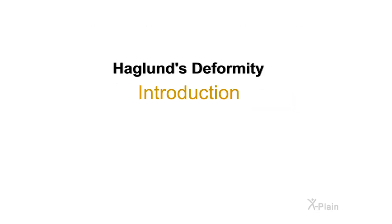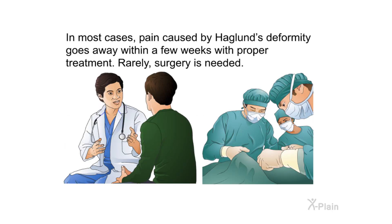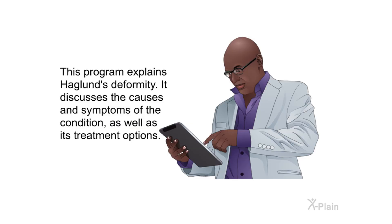Haglund's deformity is a bone enlargement that affects the foot. The condition happens at the back of the heel bone and is most often caused by improper footwear. In most cases, pain caused by Haglund's deformity goes away within a few weeks with proper treatment. Rarely, surgery is needed. This program explains Haglund's deformity, discussing the causes, symptoms, and treatment options.